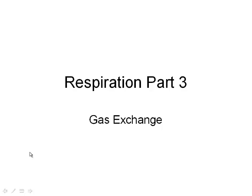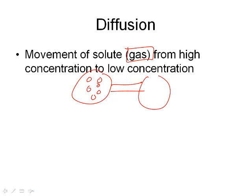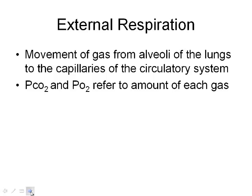Welcome back. This is the final part of our respiration unit — it's all about gas exchange and how gases travel from one part of the body to the next. Let's do a quick recap of diffusion. Diffusion is the movement of a solute — in this case a dissolved gas — from high concentration to low concentration. They want to move from an area of high concentration into an area of low concentration.